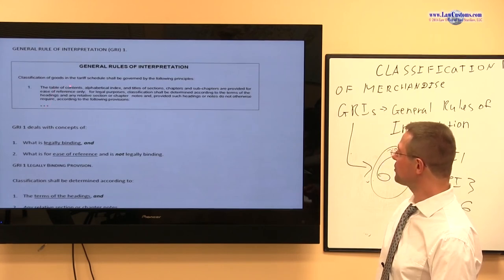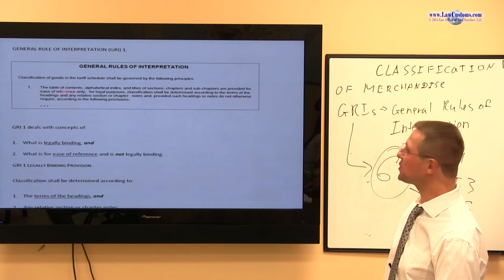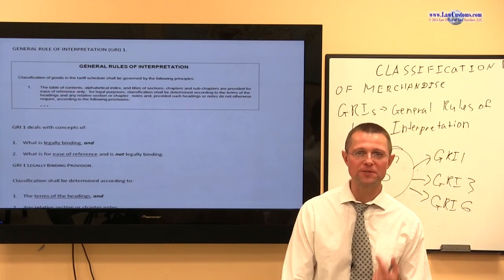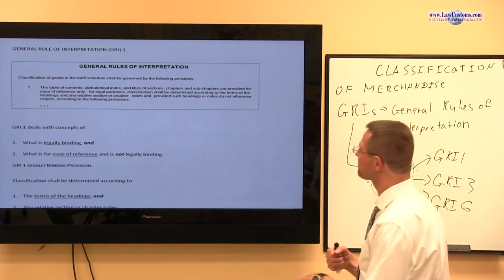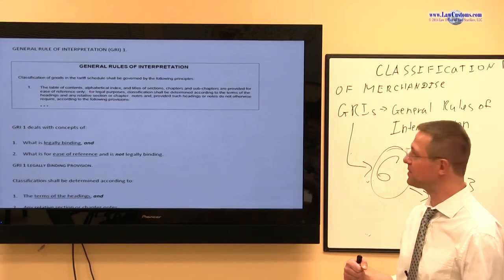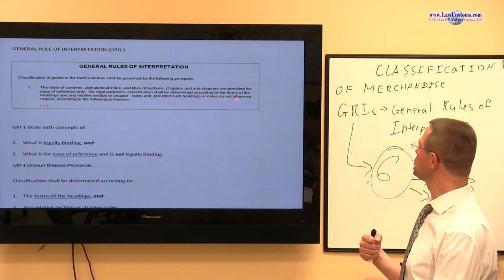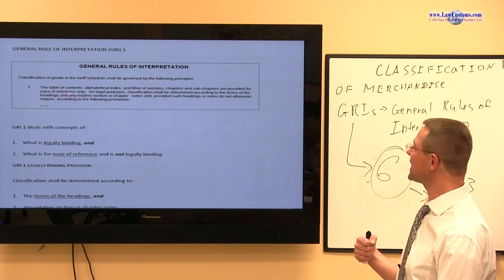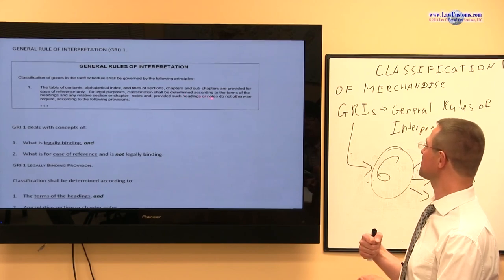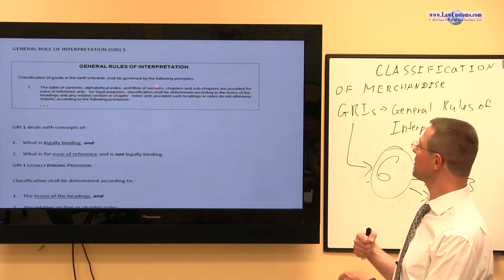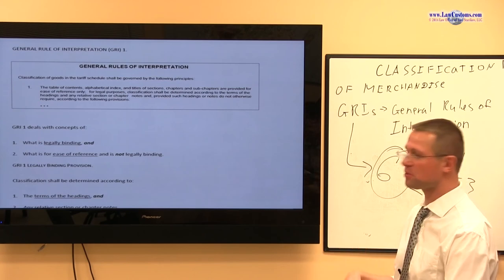So number one: table of contents, alphabetical index, titles of sections, chapters, subchapters are provided for ease of reference only. Recall that ease of reference again. We have legally binding versus ease of reference tension. For legal purposes, highlight that. Classification shall be determined according to, highlight again, terms of the heading and any relative section or chapter notes, provided that such headings and notes do not otherwise require according to the following provisions. And provided that is a prelude to the other general rules of interpretation.